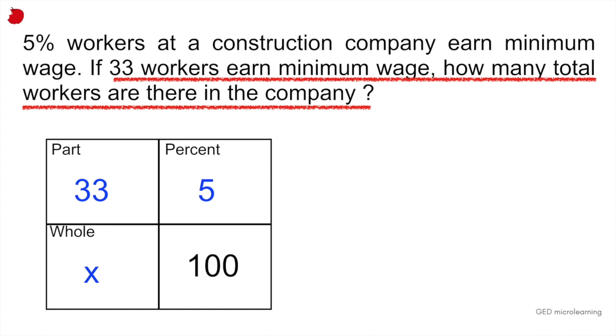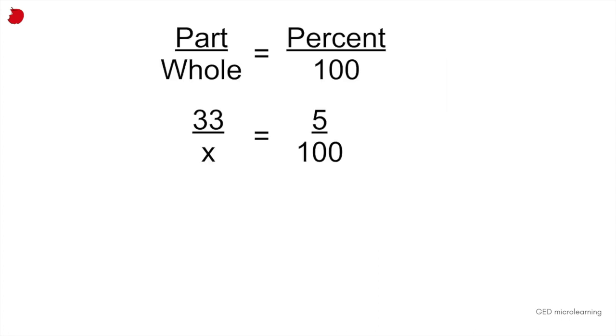And they're asking us how many total workers are there in the company or what is the whole number of people working there. So that would be our x. And now that you have this set up, you can see you have three numbers and you just have to find the fourth one. This is now going to be pretty simple because now you can set up your equation.